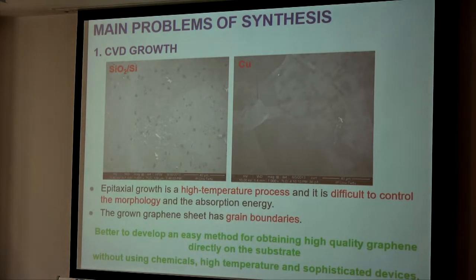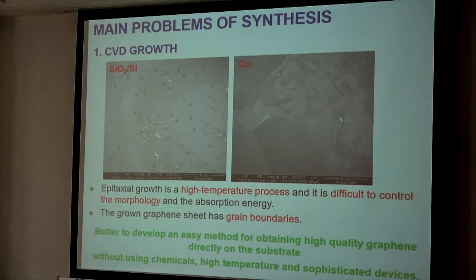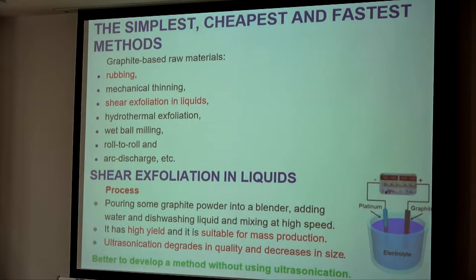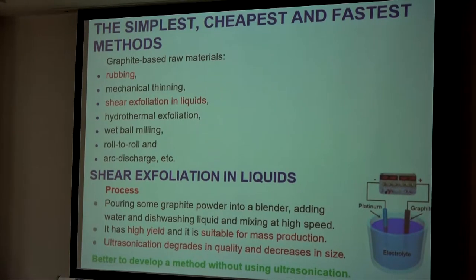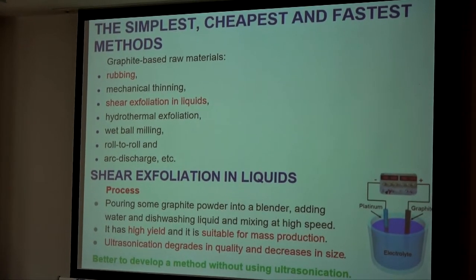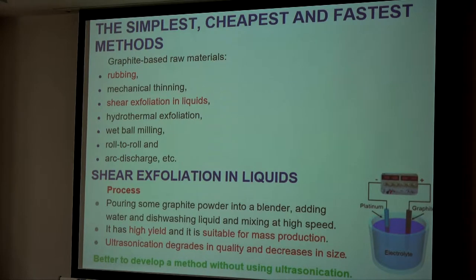But graphene has grain boundaries, and during this process we use chemicals, high temperature, and sophisticated devices. So it's very important to avoid these high temperatures, sophisticated devices, and chemicals. The simplest, cheapest, and fastest methods at the moment are rubbing, mechanical cleavage, shear exfoliation in liquids, hydrodynamic exfoliation, wet ball milling, and so on.